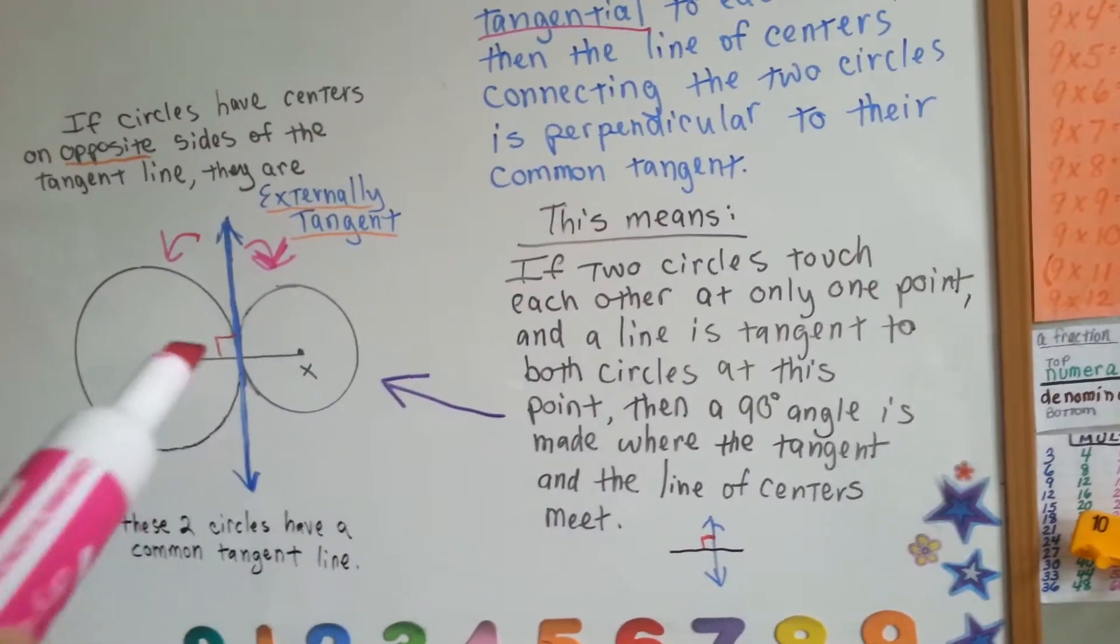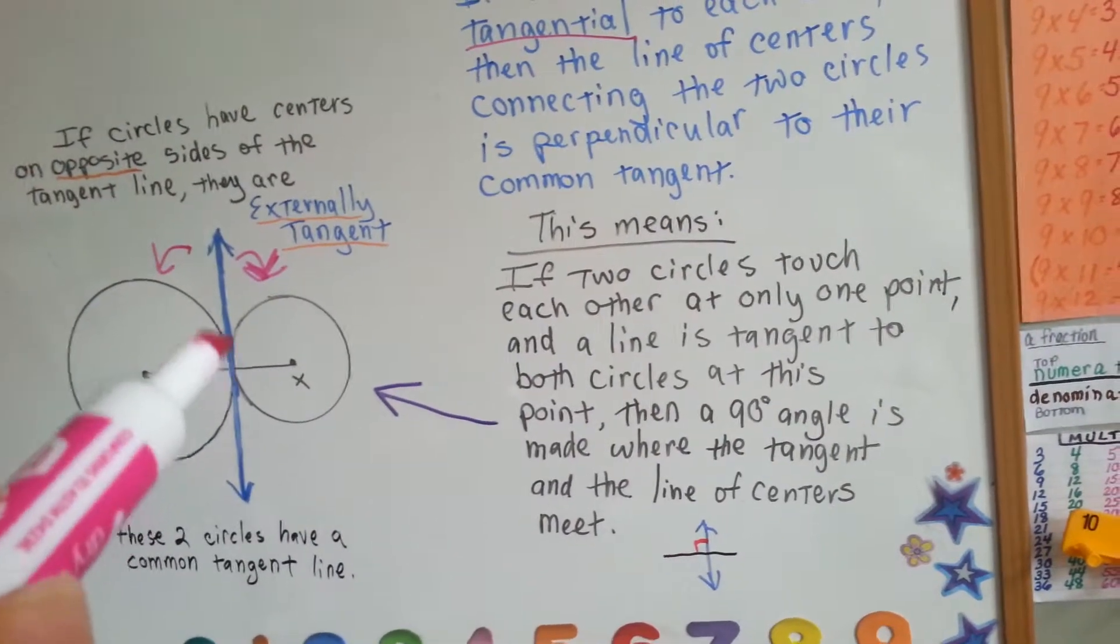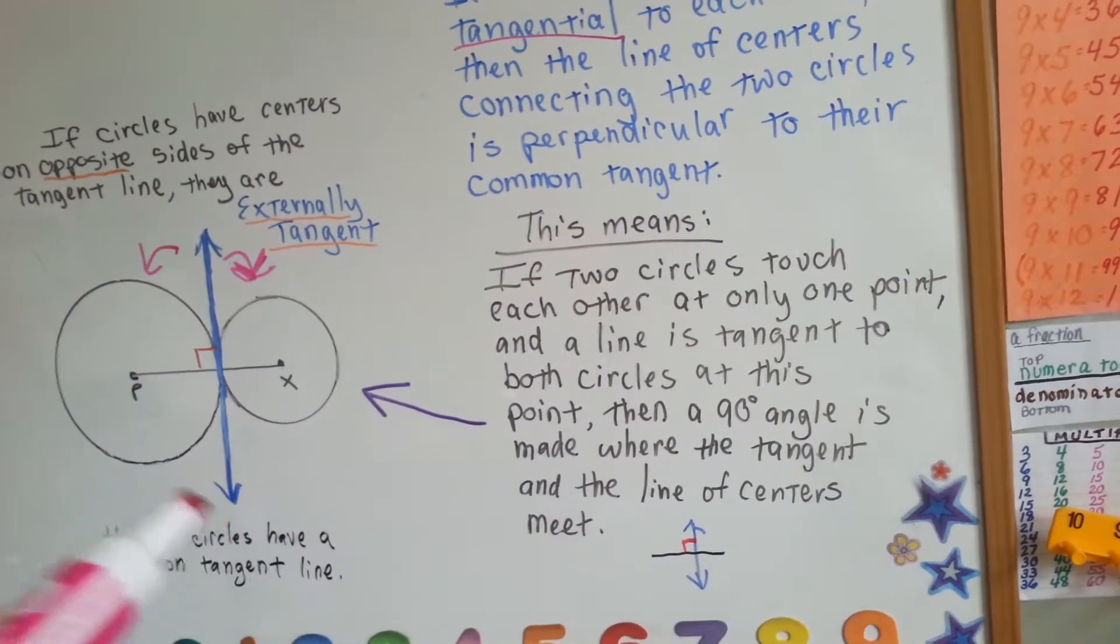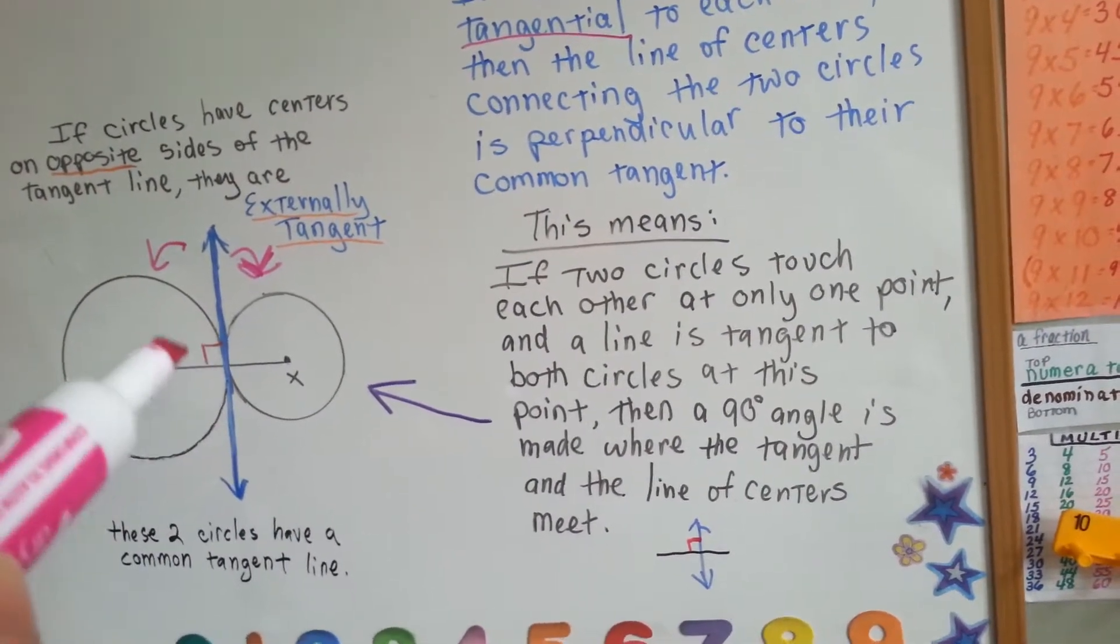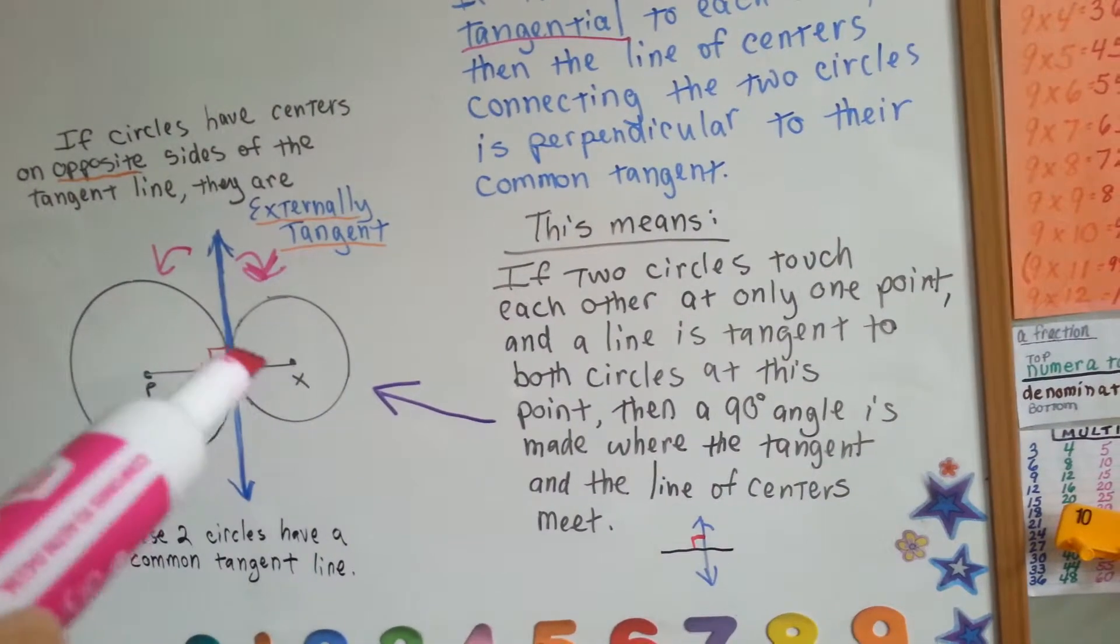This means if two circles touch each other, right here, at only one point, and a line is tangent to both circles at this point, then a 90 degree angle is made where the tangent and the line of centers meet.